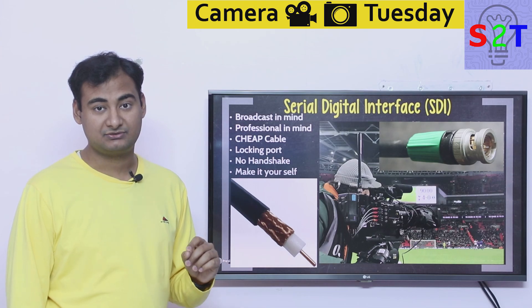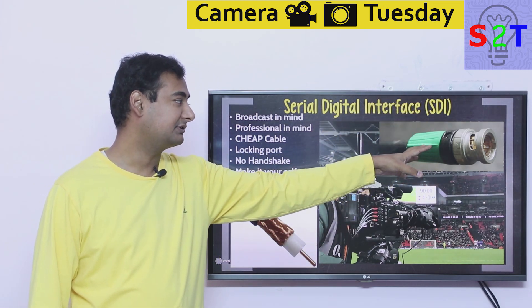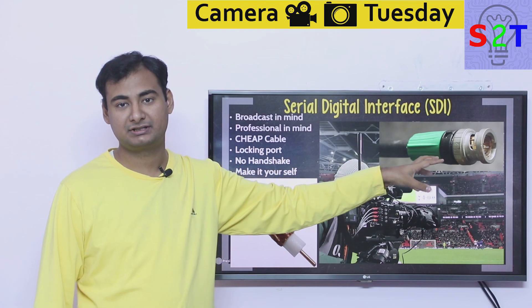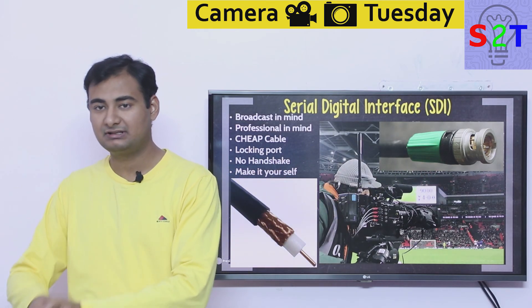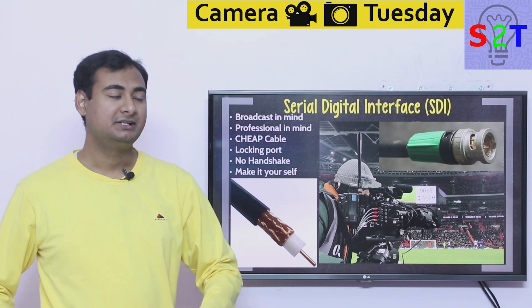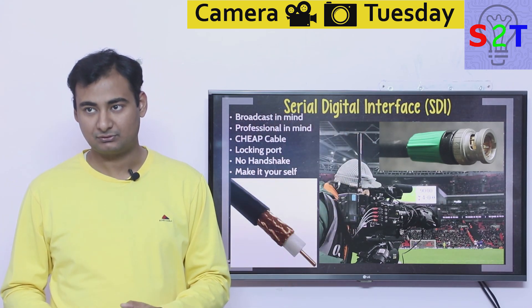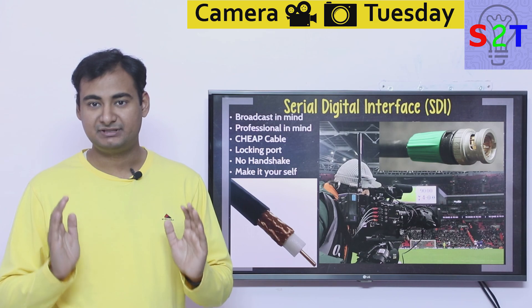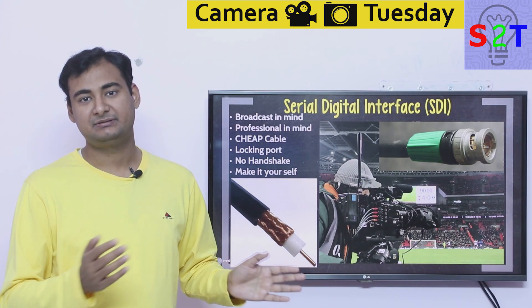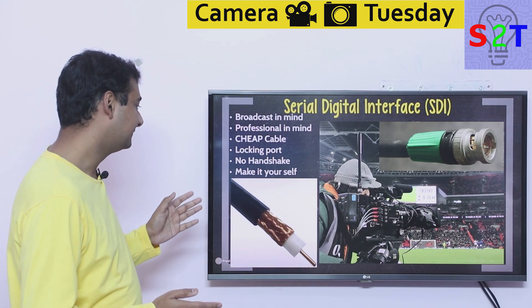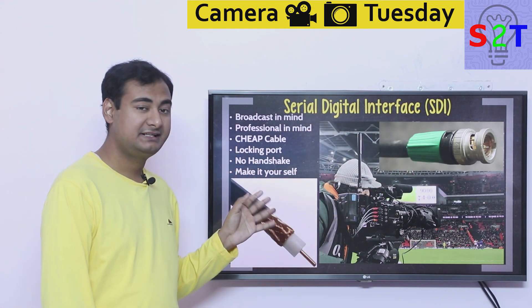SDI also comes with what we call a BNC connector — a locking connector. You put it in, rotate it, and it will not come off. Unless you yank it with excessive force or intentionally unlock it, it gives you peace of mind that it won't accidentally disconnect.